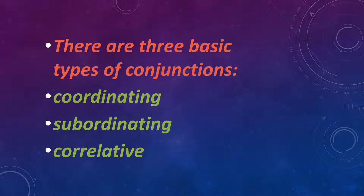There are three basic types of conjunctions: coordinating conjunction, subordinating conjunction, and correlative conjunction. Coordinating conjunctions are those conjunctions that connect two main sentences. For example, 'I am dancing' and 'I am eating' can be said as 'I am dancing and eating.' Here, 'and' is a coordinating conjunction, because both sentences are independent.